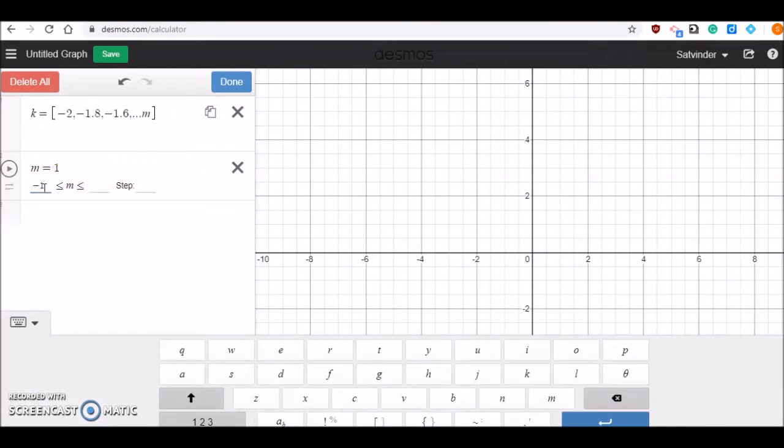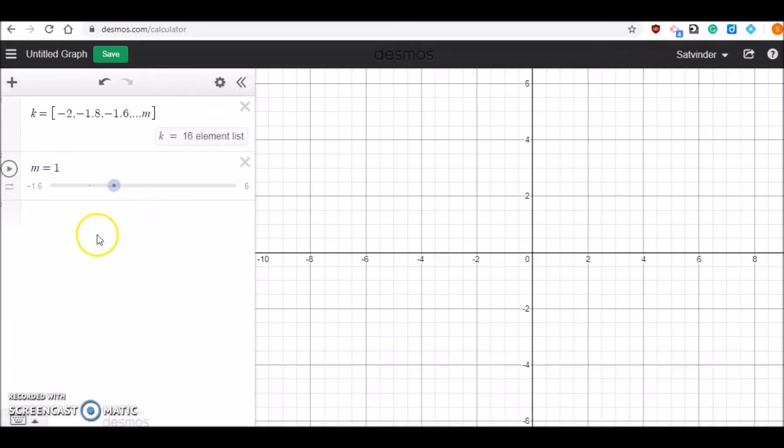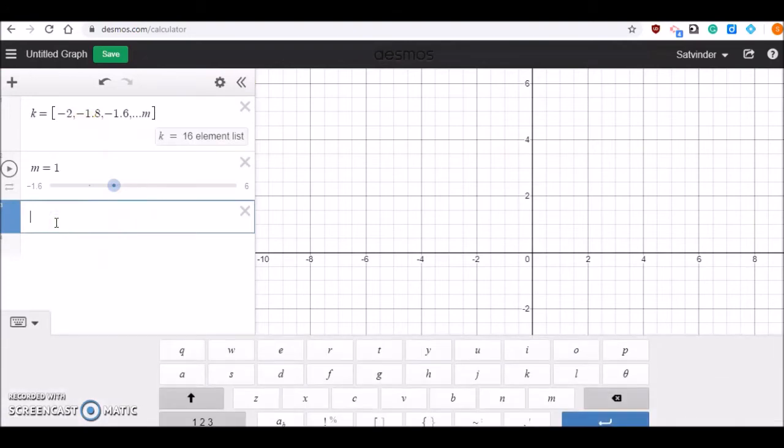Let's say it's minus 1.6 to 6. So my slider is there, my list is there. Now I want which function I would like to have, the graph for example sine function, cosine function, or any polynomial function.